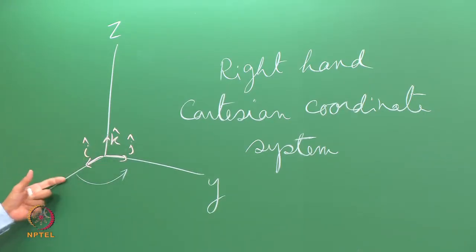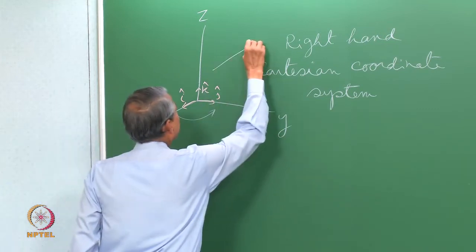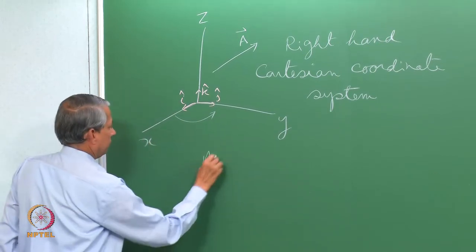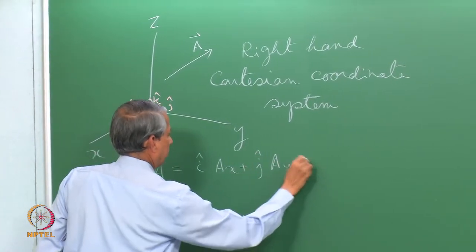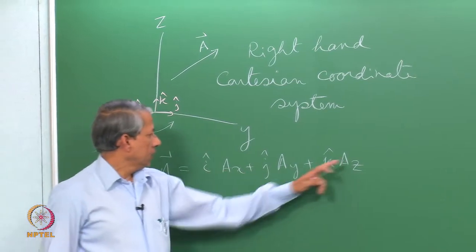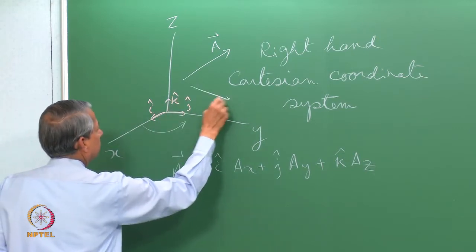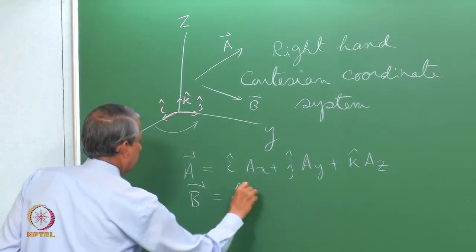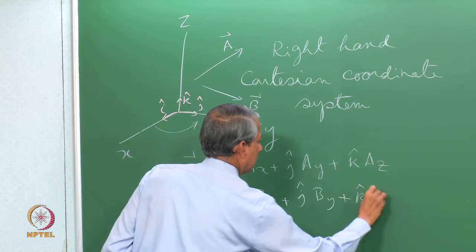The magnitude of i, j, k is 1 and their directions are along x, y, and z respectively. In terms of these, I can write any vector. For example, vector A can be written as A = ax·i + ay·j + az·k, where ax, ay, az are the three components. Similarly, vector B can be written as bx·i + by·j + bz·k.